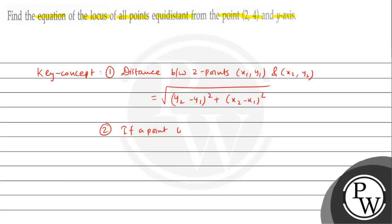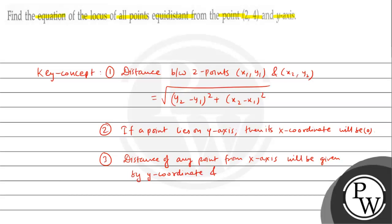if a point lies on y-axis, then its x-coordinate will be 0. And distance of any point from x-axis will be given by y-coordinate, and distance of that same point from y-axis is given by x-coordinate.